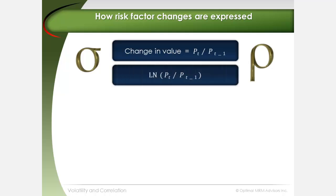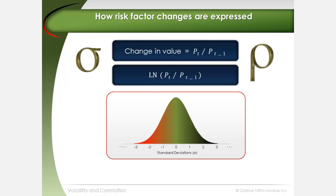This means that if we took the natural logarithm of a series of changes in the value of a risk factor and plotted those changes on a chart, the resulting pattern would be the familiar bell shape known as a normal distribution.